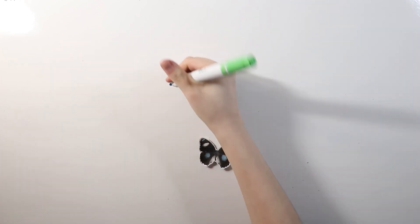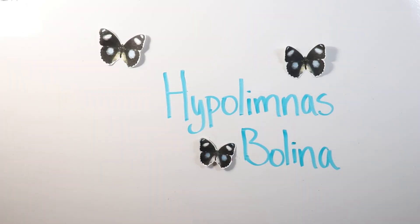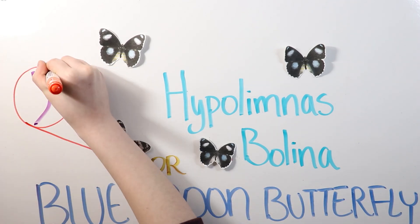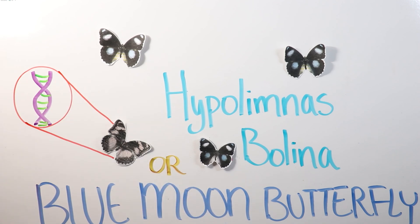But nonetheless, the Hypolyminous bollina, or the blue moon butterfly, is still an important species that made a tremendous comeback thanks to its genes.